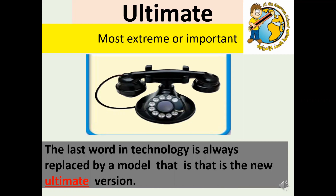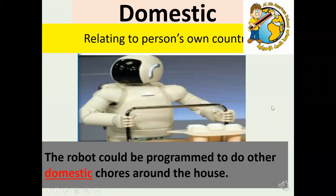5. Ultimate. The last word in technology is always replaced by a model that is the new ultimate version. 6. Domestic. A robot might be programmed to wash dishes or do other domestic chores around the house.